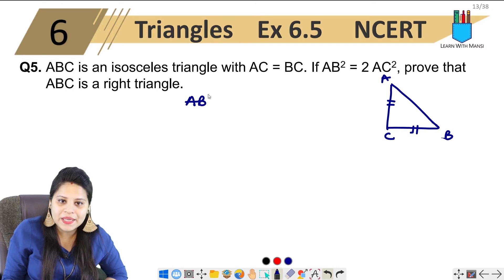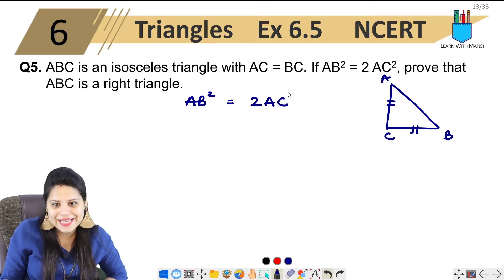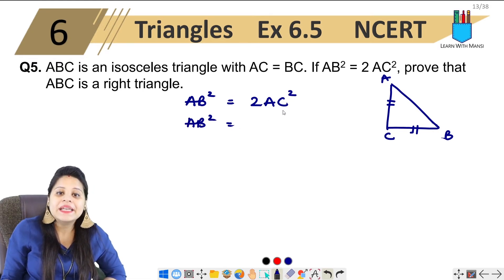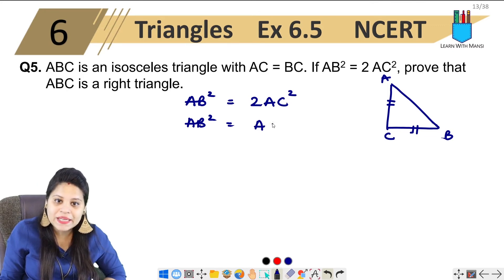Let's write here, let's see AB square equal to two of AC square. So what I can write is AB square. Now two of AC square means AC square plus AC square.